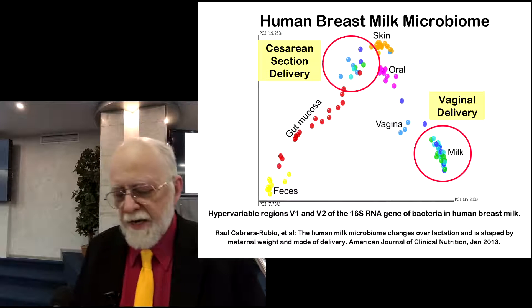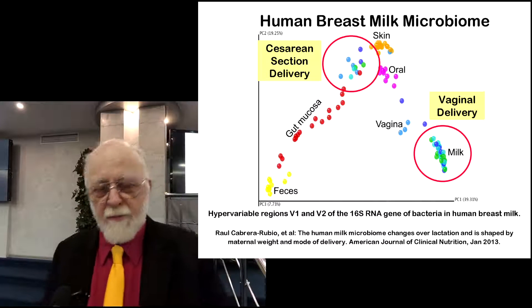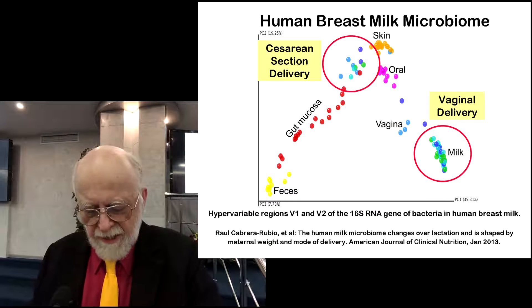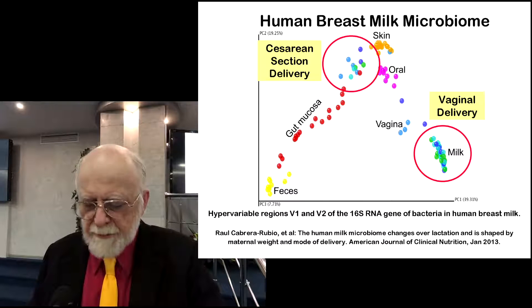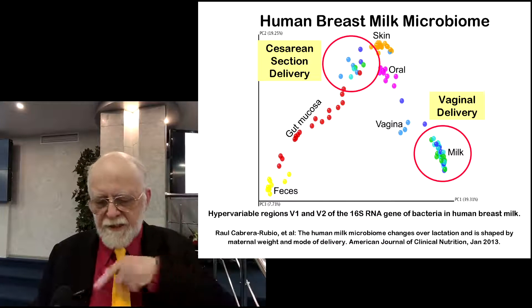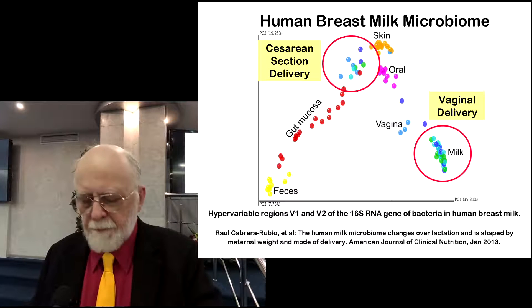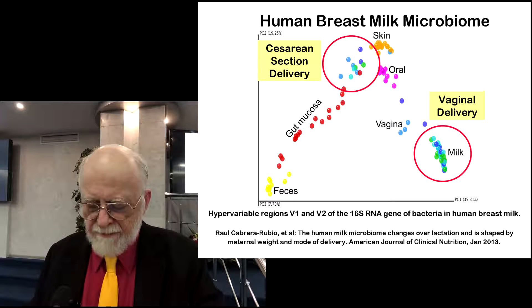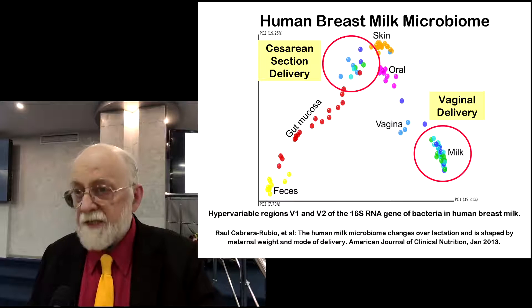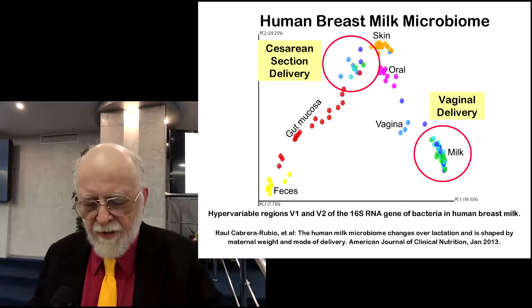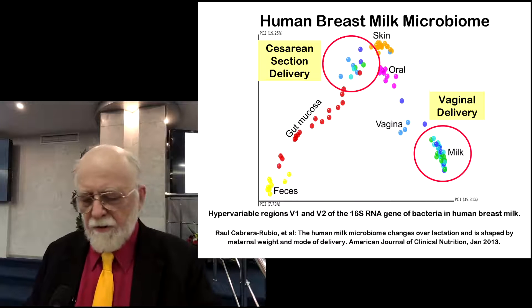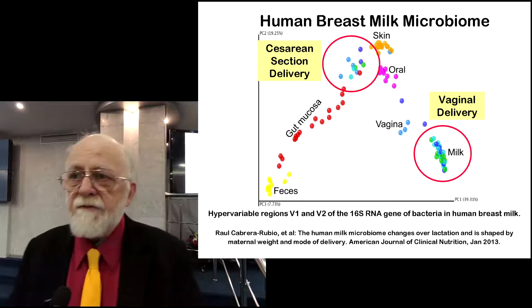We also get microbes from our mother. Human breast milk microbiome is a very interesting microbiome. This is a plot of species organized on an XY basis so you can see different species at different parts of the plot. Normal mother's milk with a standard vaginal delivery is at the bottom right. But the species from a caesarean section delivery are quite different, at the middle top of the graph. The milk the mother puts out is very dependent upon the type of delivery.